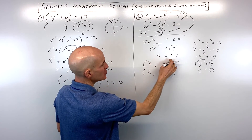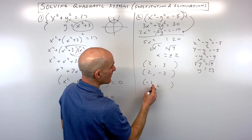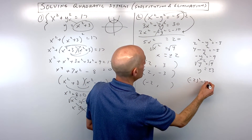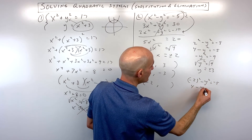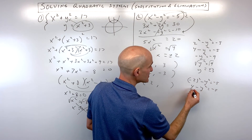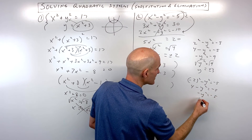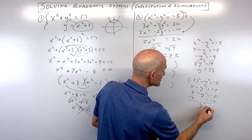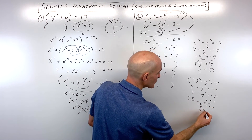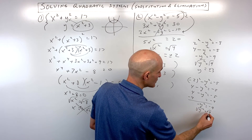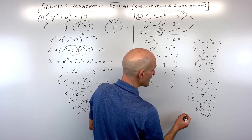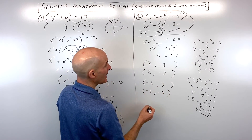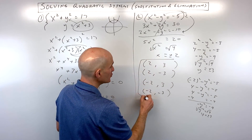Now let's check x equals negative 2: negative 2 squared minus y squared equals negative 5, giving 4 minus y squared equals negative 5. Subtracting 4 from both sides: negative y squared equals negative 9, so y squared equals positive 9, and y equals plus or minus 3. So we also get (negative 2, 3) and (negative 2, negative 3). Here we're actually getting four solutions.